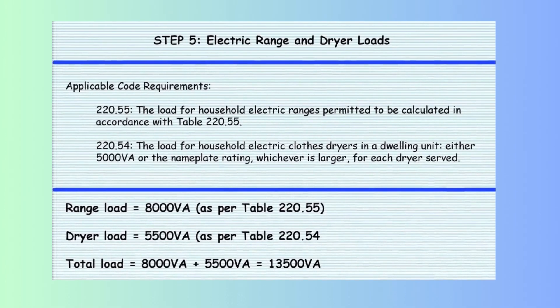Step 5 calculates the loads for the electric range and dryer based on the 2023 NEC. Per Table 220.55, the load for the household electric range is calculated as 8,000 volt-amperes. Per Section 220.54, the electric dryer load is the larger of 5,000 VA or the nameplate rating — in this case, 5,500 volt-amperes. Total load: 8,000 VA + 5,500 VA = 13,500 volt-amperes.